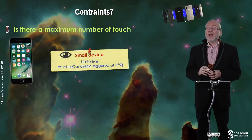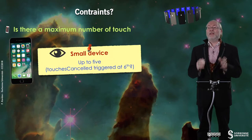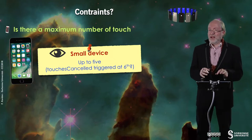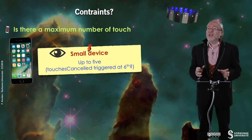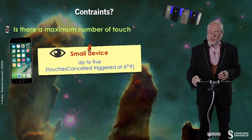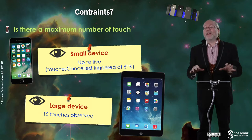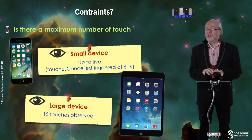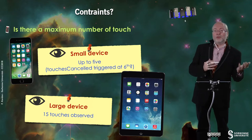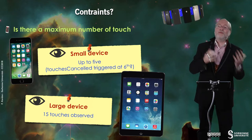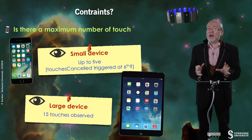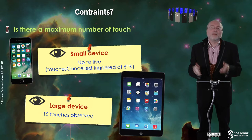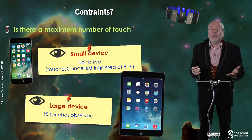There are some constraints. The first question is: is there a maximum number of touches for a given device? On a small device it goes up to five — if you add a sixth contact, everything is cancelled. But for a large device, I tried with my wife and we could observe that you could have 15 touches all together on the screen. So apparently small devices and large devices do not behave totally similarly. I don't know if there is a maximum for large devices, but at least we can go up to 15 because I personally experimented it.